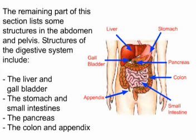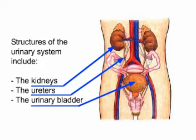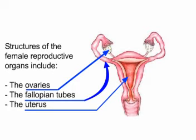Structures in the abdomen and pelvis that can be examined include the digestive system: the liver and gallbladder, the stomach and small intestines, the pancreas, the colon and appendix. Structures of the urinary system include the kidneys, the ureters, and the urinary bladder. Structures of the female reproductive organs include the ovaries, the fallopian tubes, and the uterus.